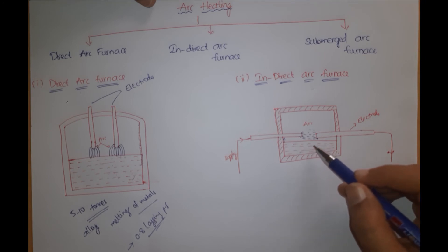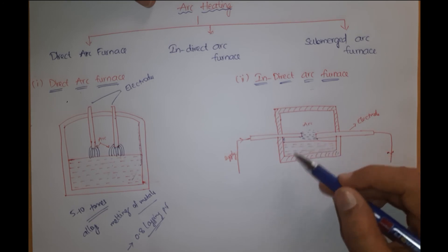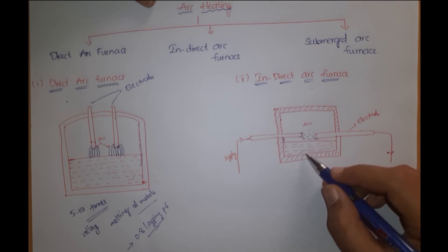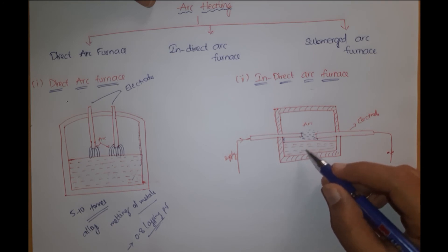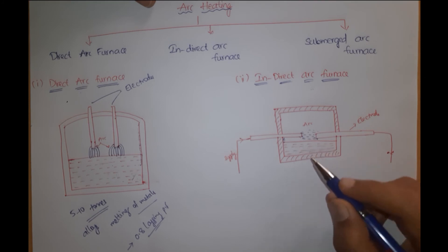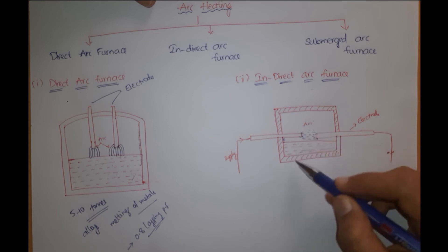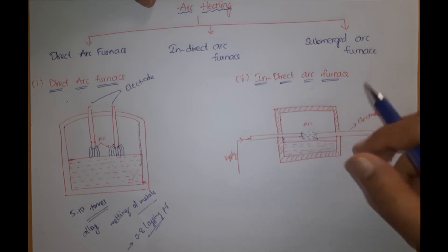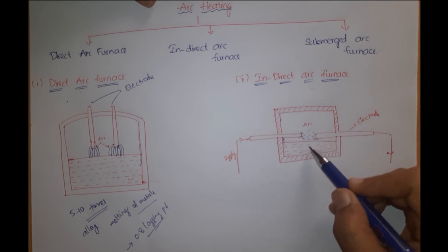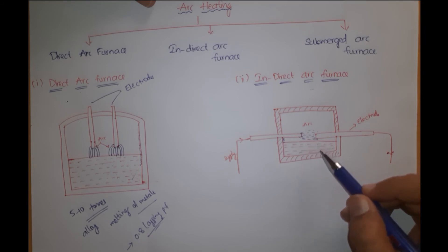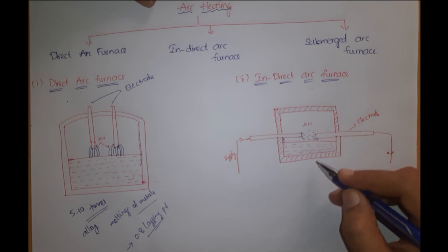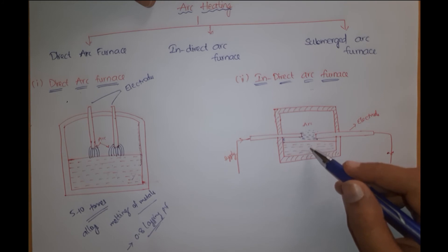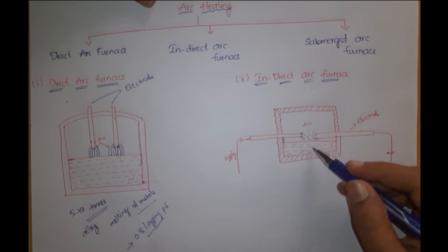To address the irregular heating, external measures are used to stir the charge. The furnace is continuously rotated with the help of electric motors so that there is mixing of charge inside the furnace. This stirring or rotating action increases the efficiency of the indirect arc furnace because the complete charge gets equally heated as quickly as possible.